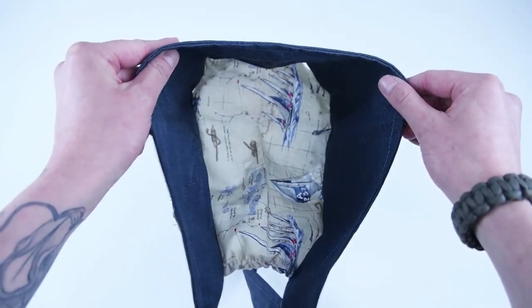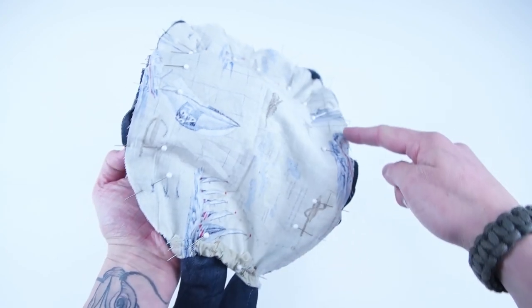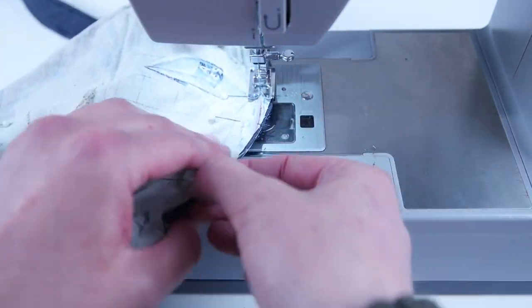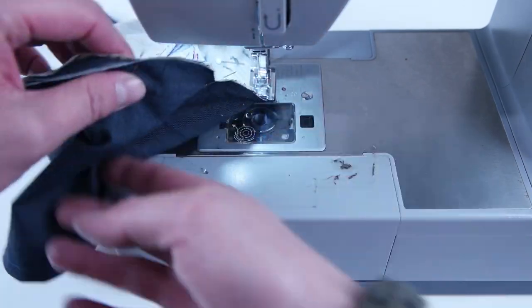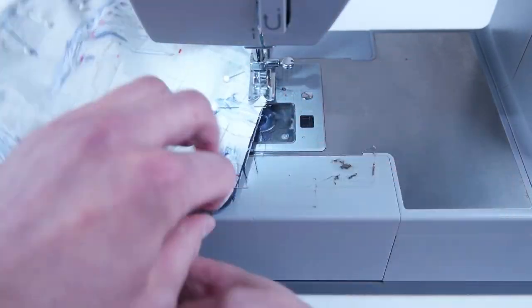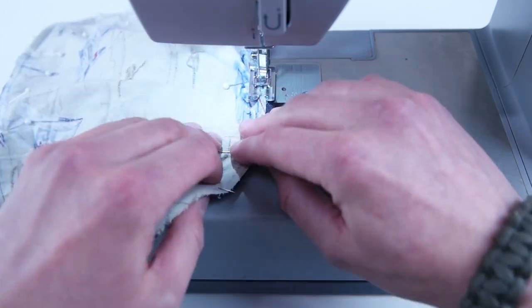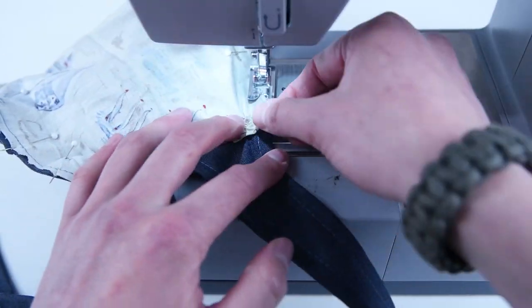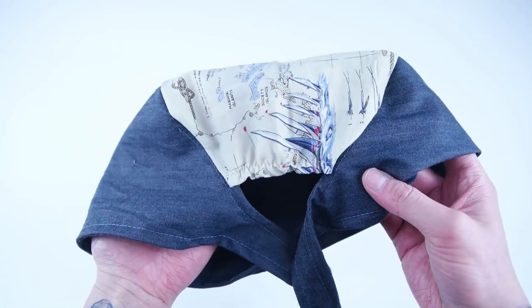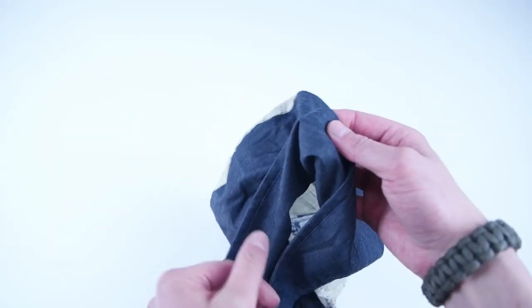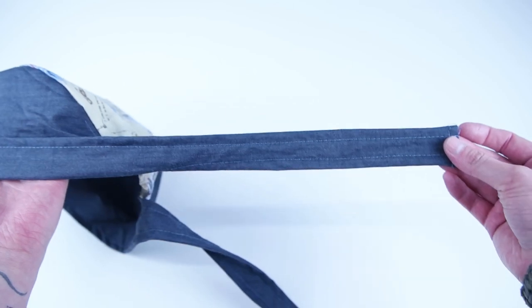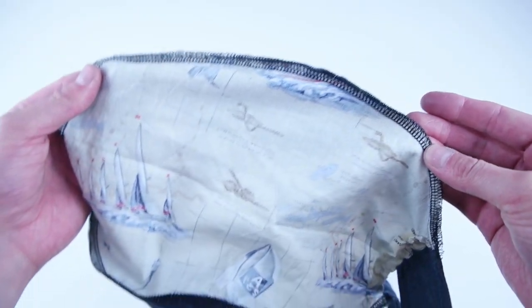And once you have it all pinned down we're gonna sew at a 1.25 inch seam allowance around the outside edge. You can snip notches around the curve to reduce the bulk. At this point I like to flip it right side out and check all the edges. Make sure all the layers got sewn together. And another technique if you have a serger you can serge this inside edge to reduce the fraying.